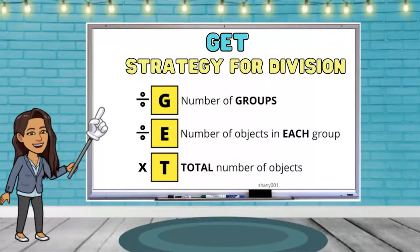G stands for number of groups. E stands for number of objects in each group. T stands for total number of objects.